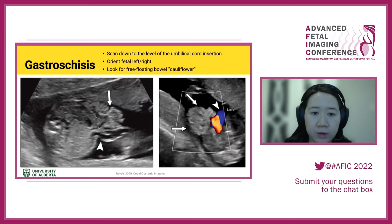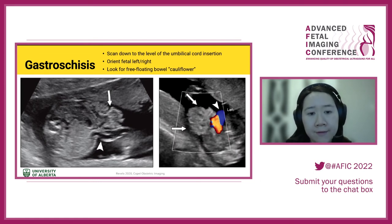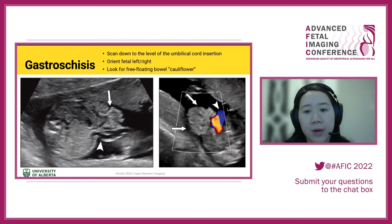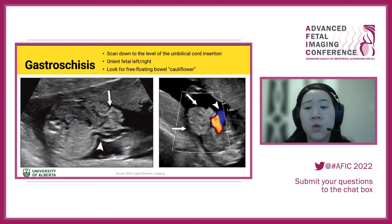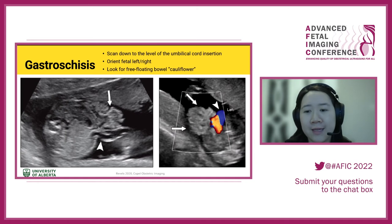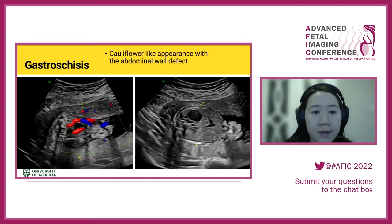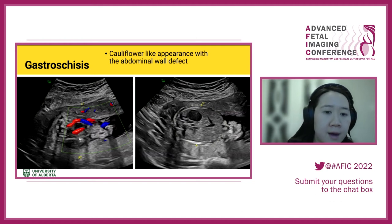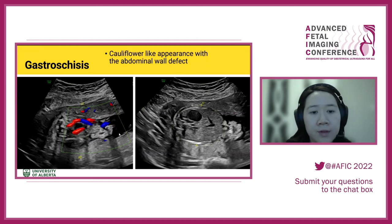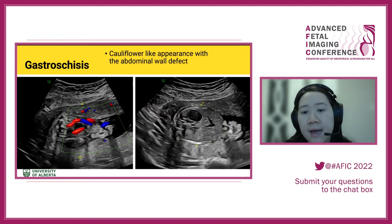When looking at fetal gastroschisis, scan down to the level of the umbilical cord insertion. On the left image, you can see the cord insertion and the abdominal wall defect just above it with a cauliflower-like free-floating bowel. On the right image, the cord insertion is to one side with a hyperechogenic lesion adjacent to it attached to the abdominal wall — that's your extruded bowel. In another case from our clinic, you can see the umbilical cord vessels along the left side and the defect on the right.